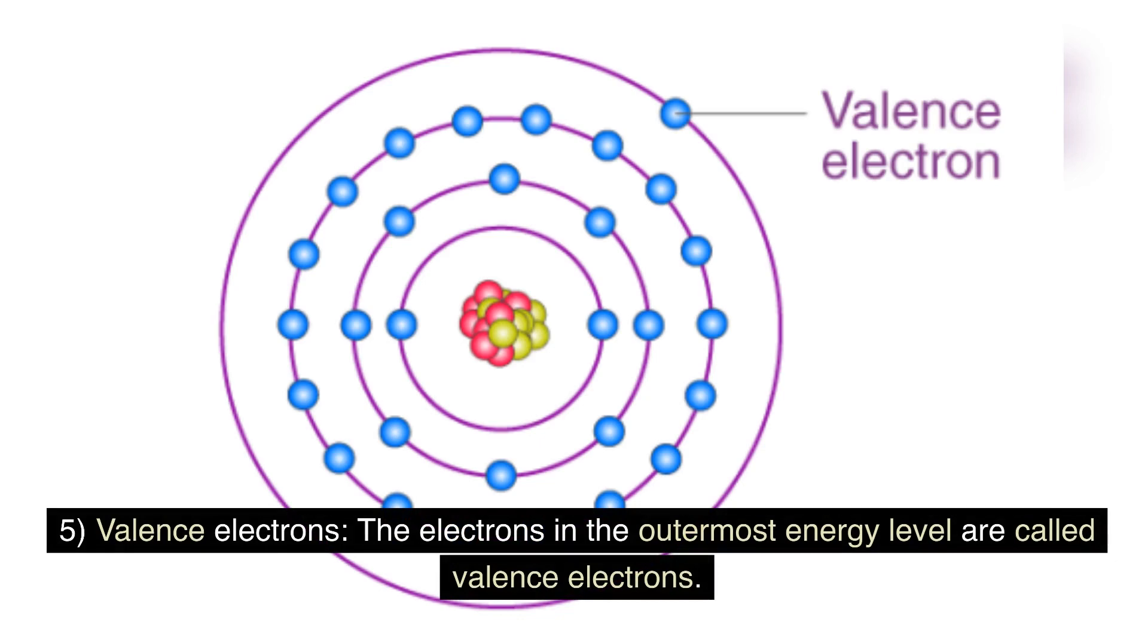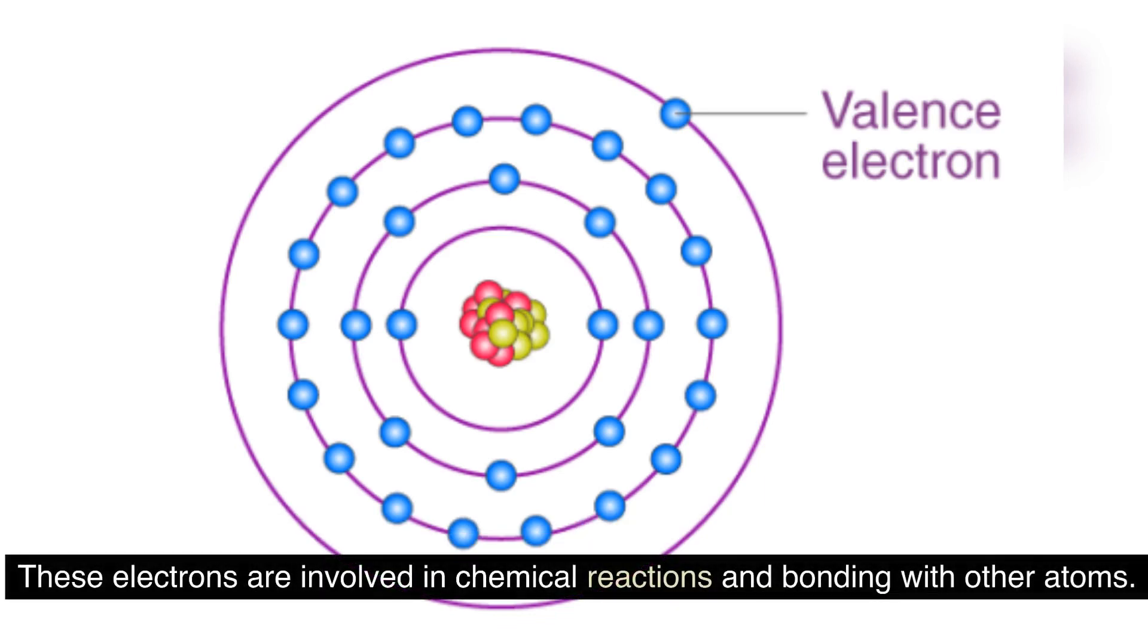Valence electrons: the electrons in the outermost energy level are called valence electrons. These electrons are involved in chemical reactions and bonding with other atoms.